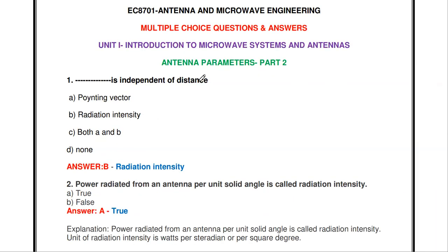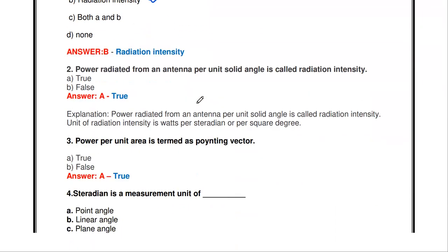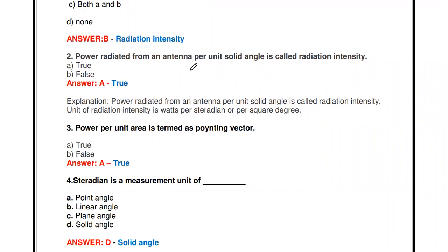The first question: which quantity is independent of distance? Options are Poynting vector, radiation intensity, both A and B, or none. The answer is radiation intensity — radiation intensity is independent of distance. The next question: power radiated from an antenna per unit solid angle is called radiation intensity. That is true. The definition of radiation intensity is the power radiated from an antenna per unit solid angle.